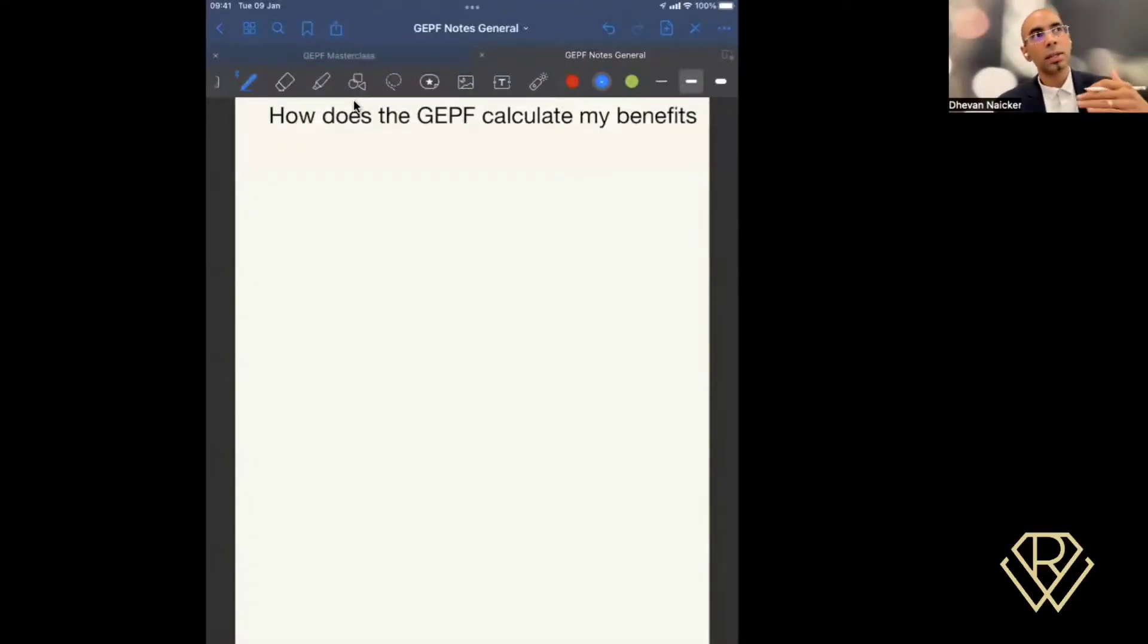Excellent. Now, each of your benefits, because GEPF is a defined benefit fund, so I'll write that in here. It's what is called a defined benefit fund. Each of these benefits are defined or they're calculated. So each benefit is defined, meaning your death benefit is defined. Your savings benefit or the pension that you collect is defined. The contributions to the pension is defined. So all of those are defined,